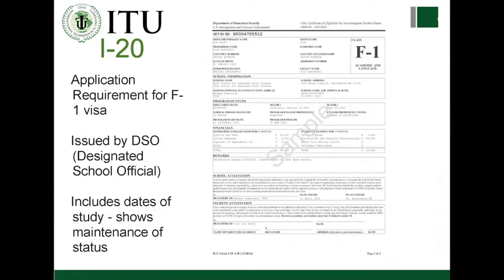Your I-20 is the document you should be very familiar with. It shows information about your program of study and personal information. I want to highlight two key areas: the program of study — you'll see a CIP code and your major, which should match what's in our student records. If you think it doesn't match, email us as soon as possible. I also want to highlight the program start and end dates — F1 students must finish their program by the end date shown on the I-20.